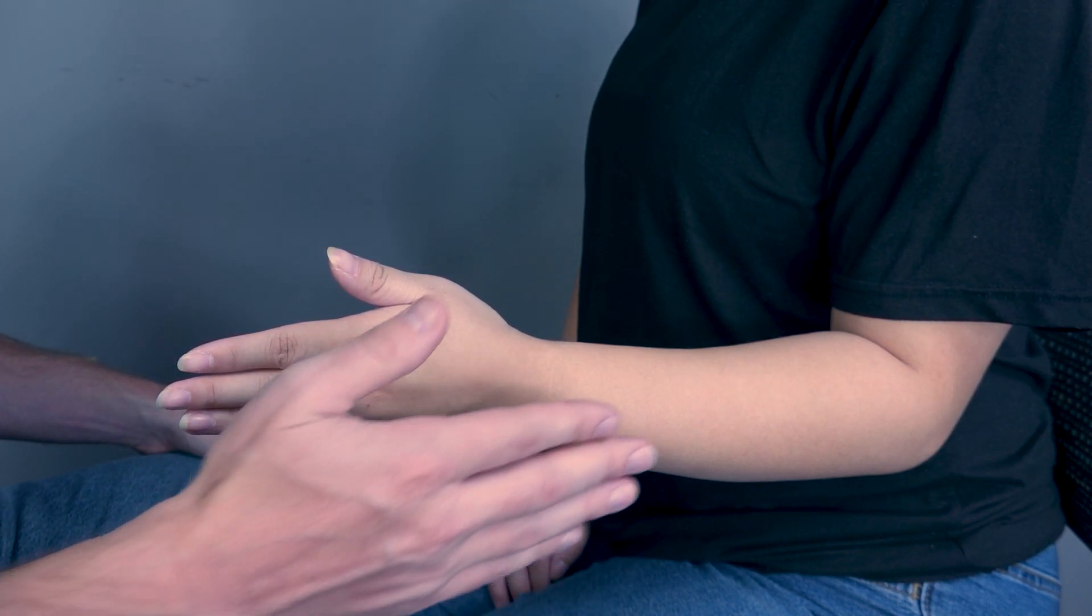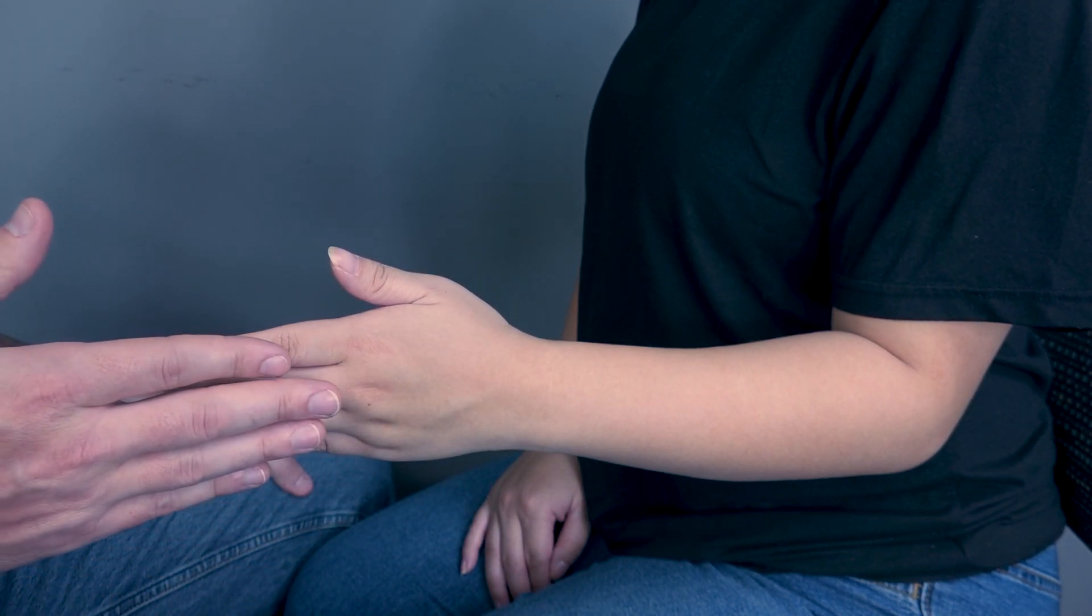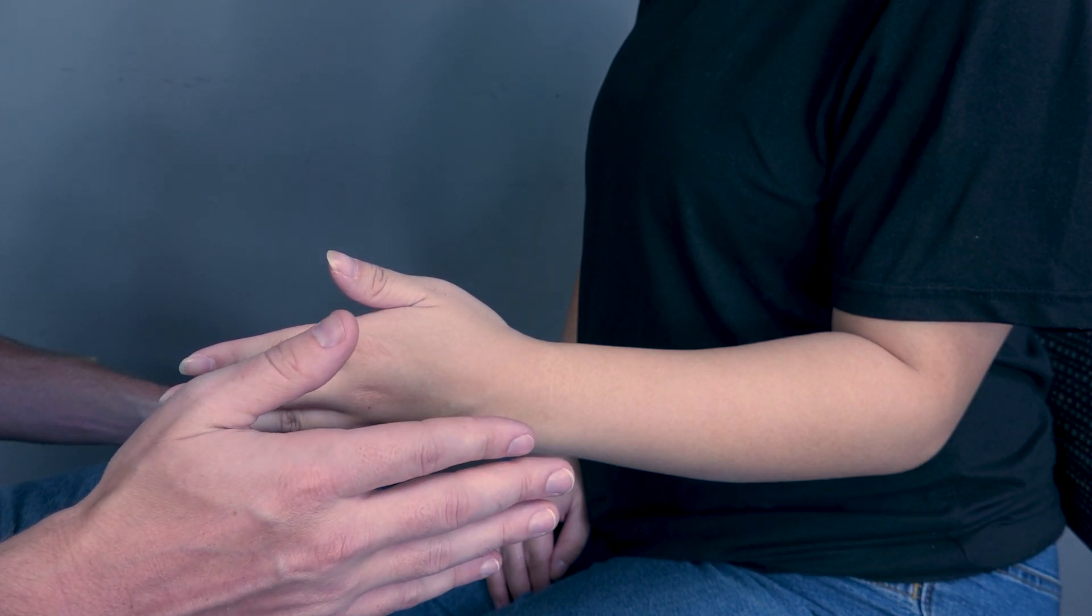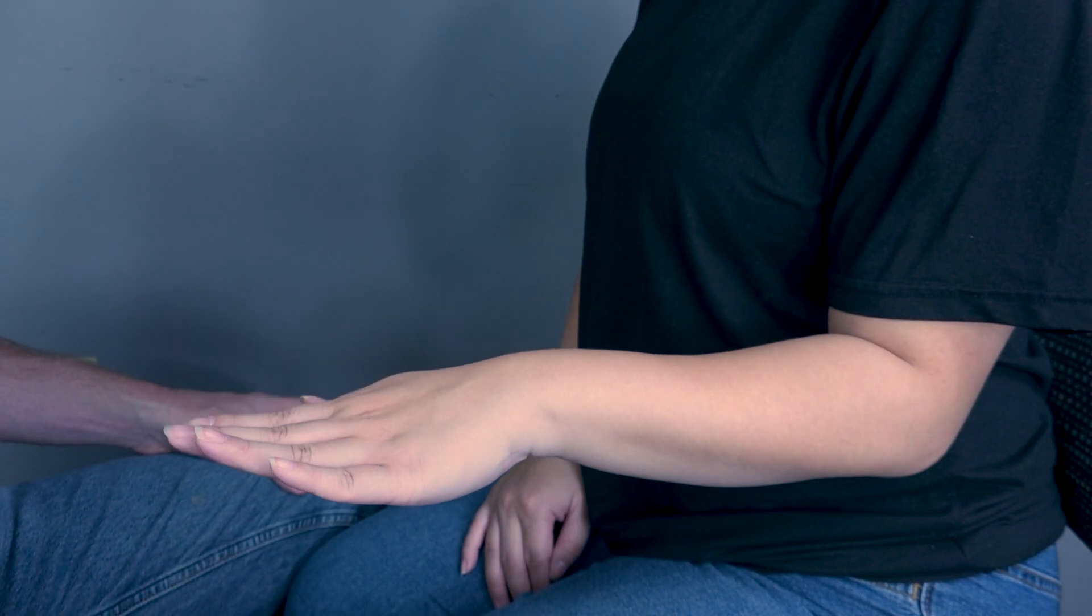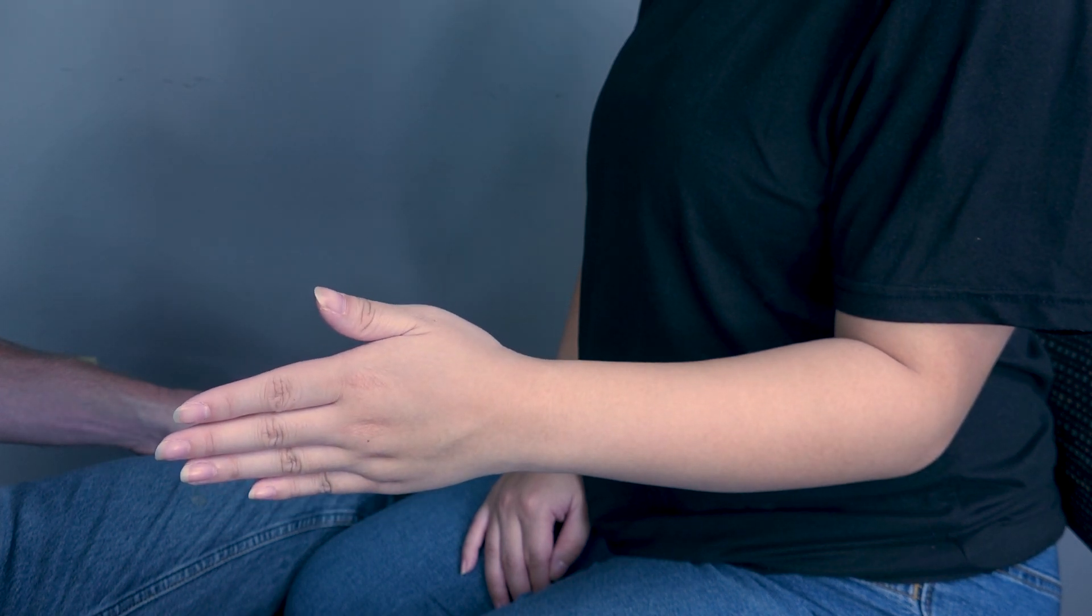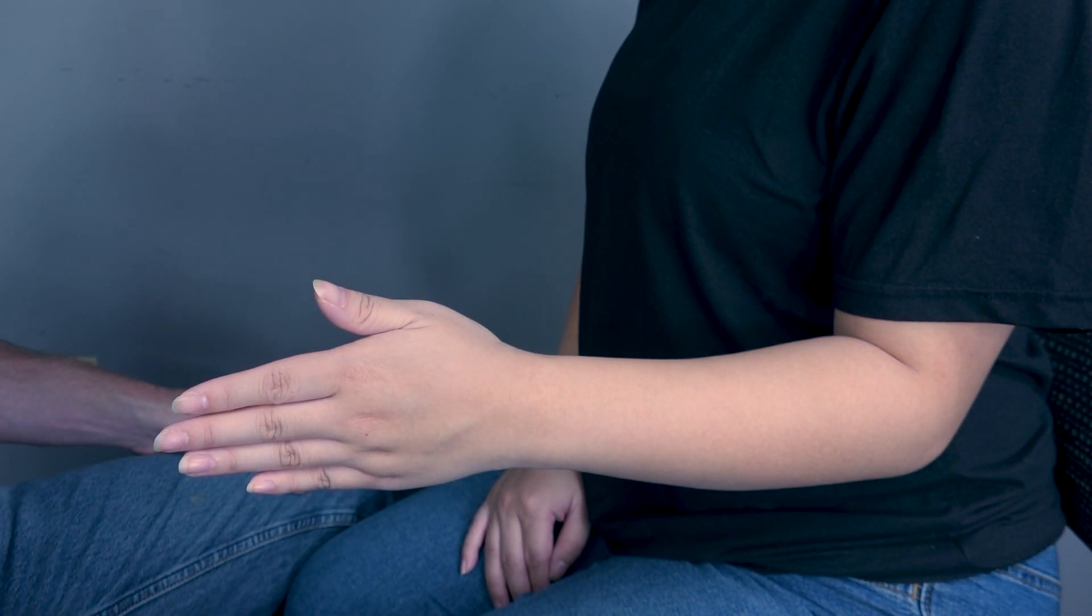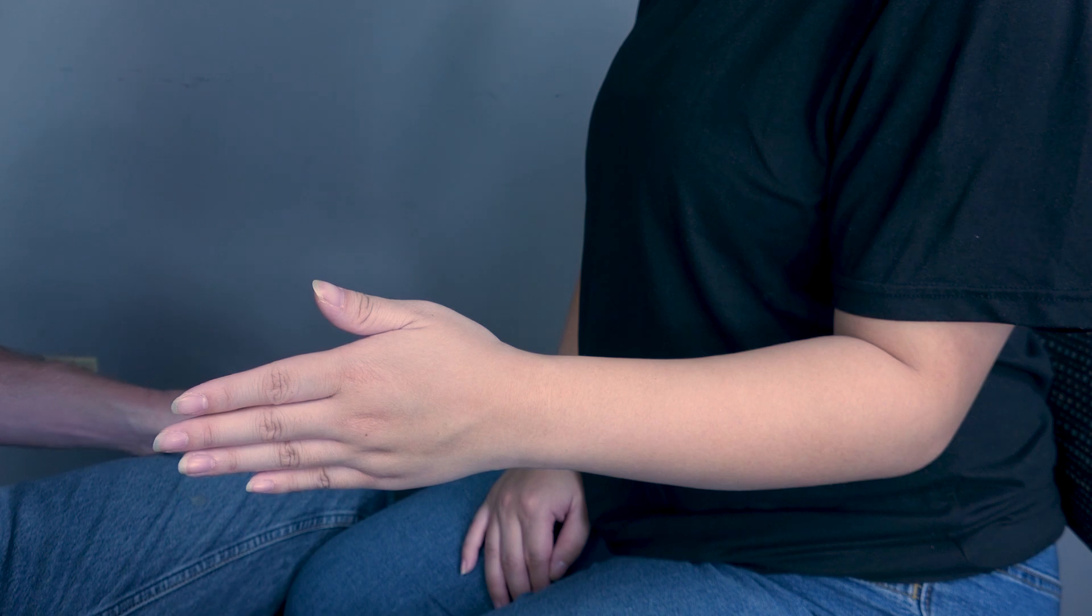You will have your patient in a neutral position first and have them pronate. Go ahead and pronate for me please. Come back. Because she's able to do that, I will rate her as a three. Now I will apply resistance to test for a four or a five.